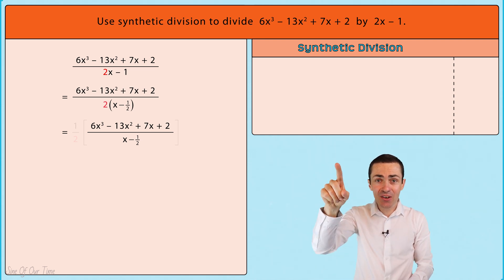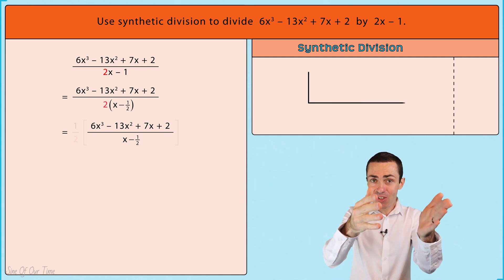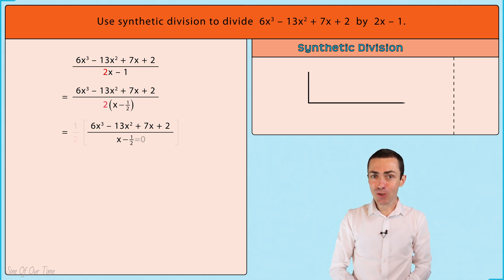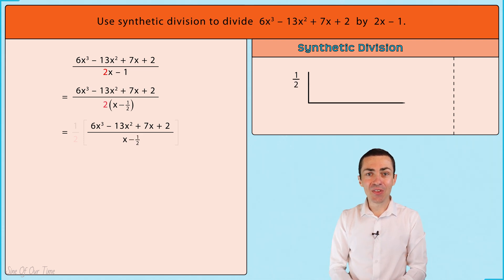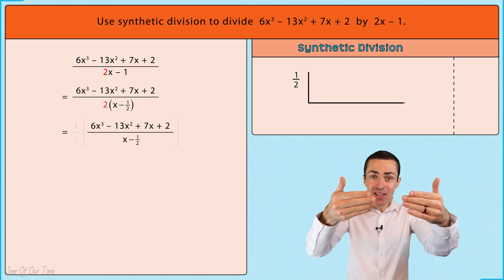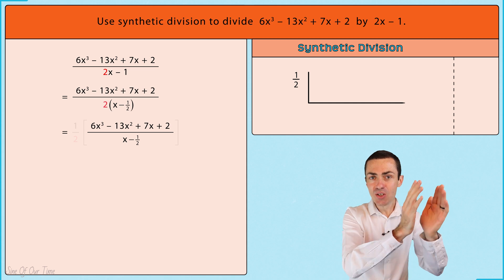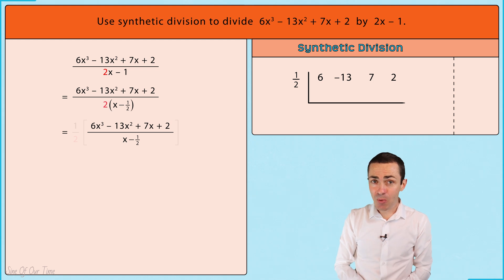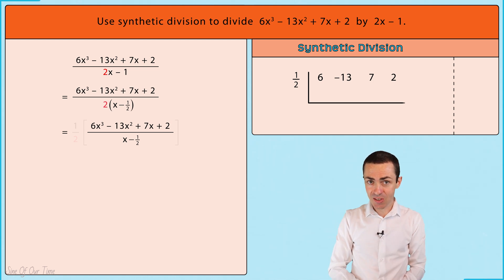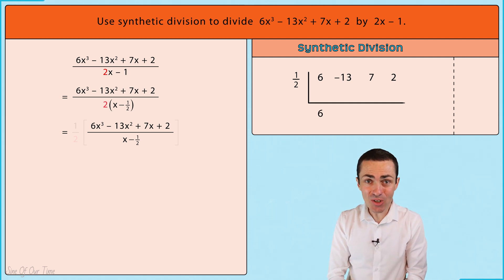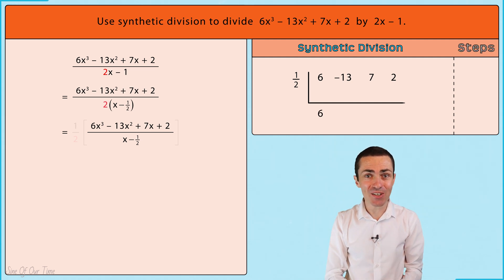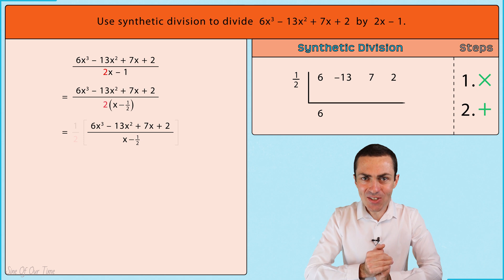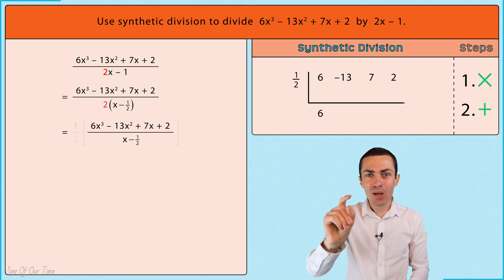We start by writing down the synthetic division symbol, and at the top on the left we write down the value of x that makes the divisor equal to zero — which in this example is one-half. Then on the inside at the top we write down the coefficients of each of the terms in the dividend, placing each in imaginary columns. To finish the setup, we take the 6 and write it below the synthetic division symbol.